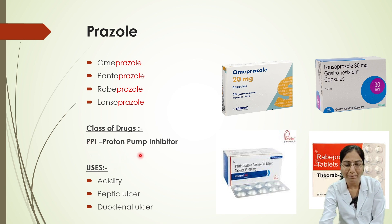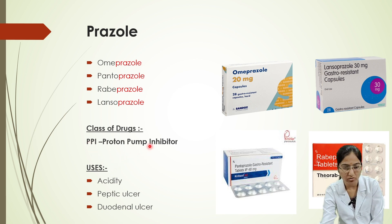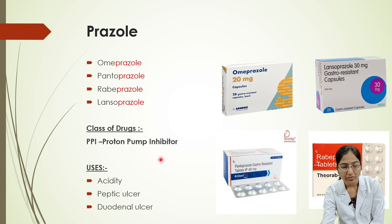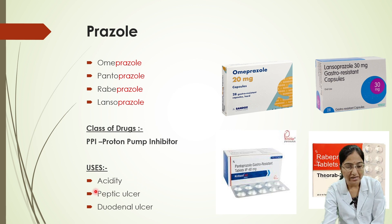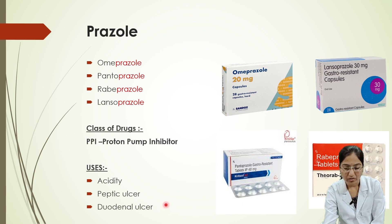This group of drugs belongs to the class known as PPIs — Proton Pump Inhibitors. The uses of these drugs include treating acidity, peptic ulcers, and duodenal ulcers.